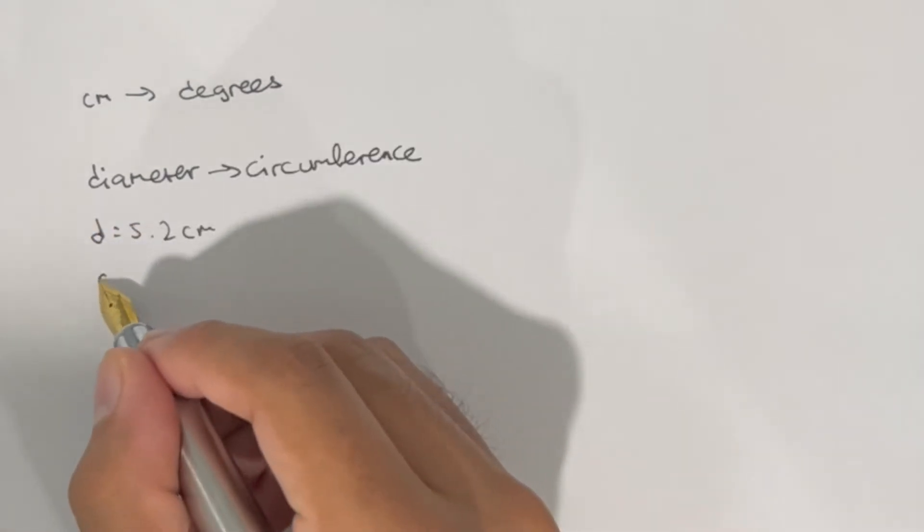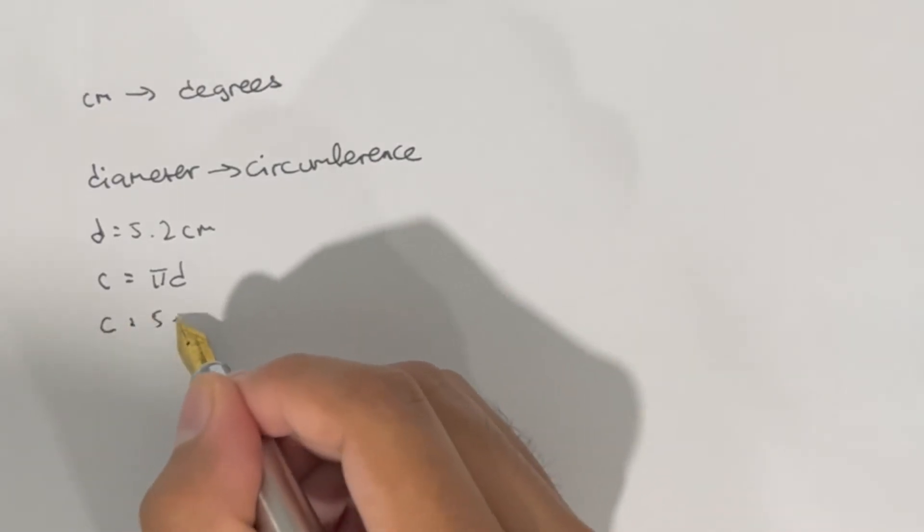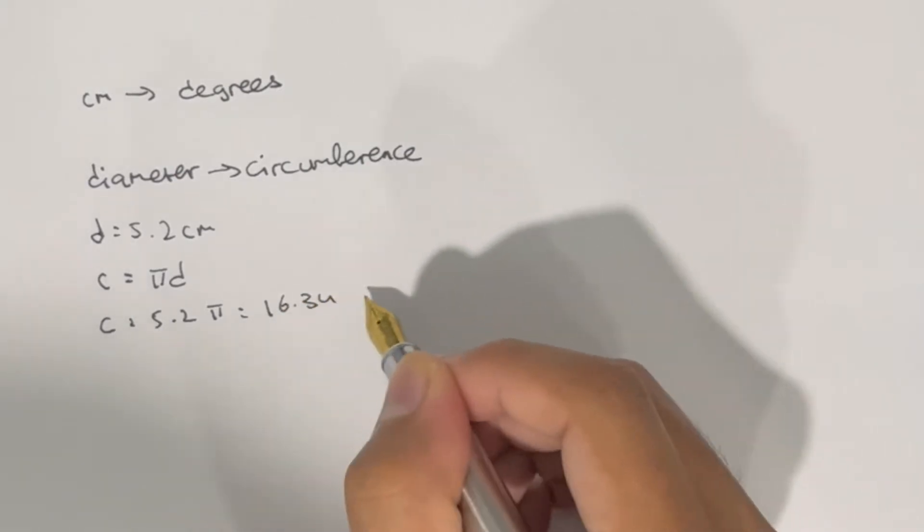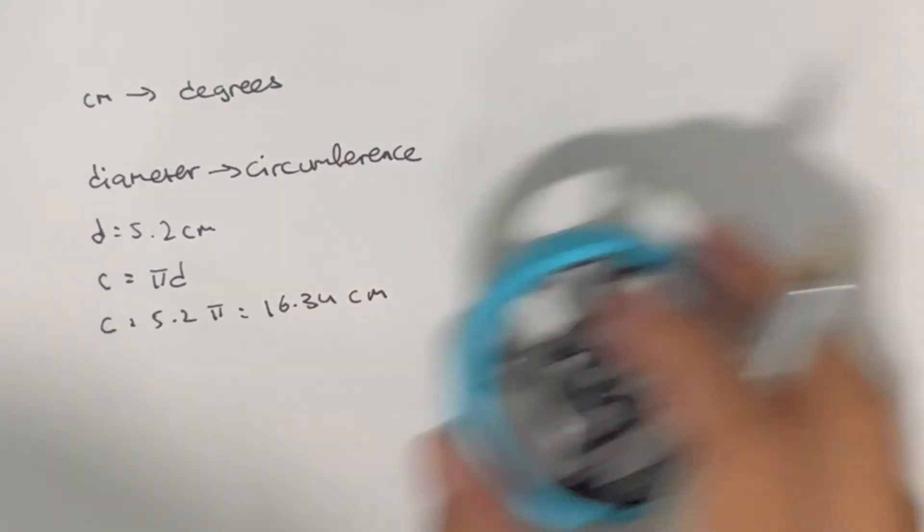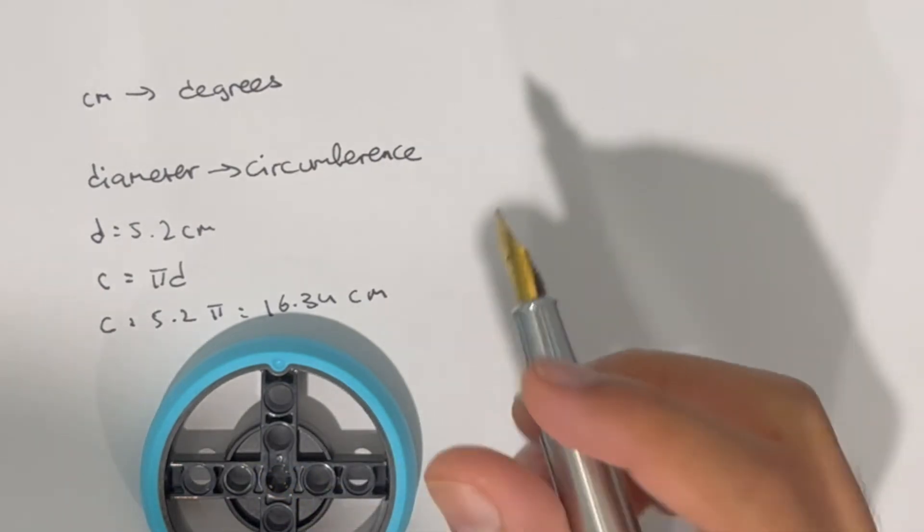So now to find circumference, the formula is πd. This is mathematical, so I'm not going to explain it, but you can search up how this formula works on your own. When I plug in my value of 5.2 centimeters for my diameter, I get 16.34 centimeters as my circumference. That means that every time that this wheel rotates, it will travel 16.34 centimeters.